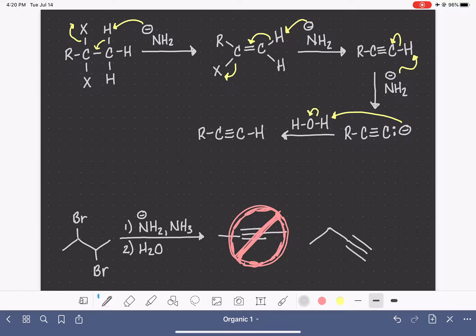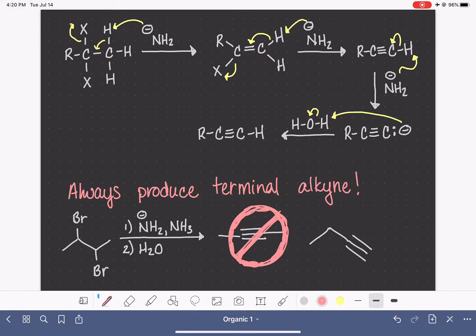No matter where the halogens are located within the molecule, we always produce a terminal alkyne. So the molecule, as it undergoes its reaction mechanism, ends up shifting the alkyne out to the end of the carbon chain. When we're using these reagents, we do have ways of making an internal alkyne, but these reagents will always produce a terminal alkyne regardless of where our halogens may be located on the carbon chain.